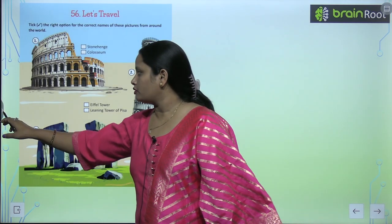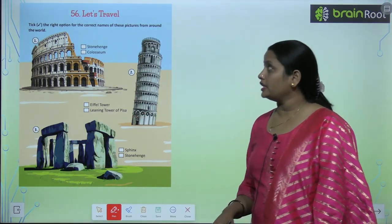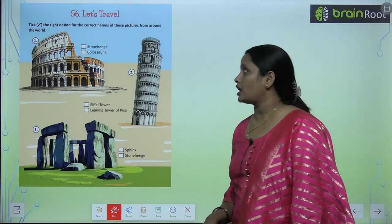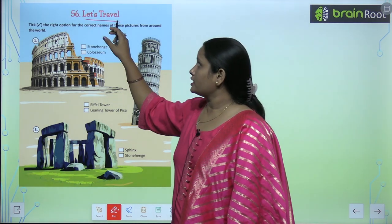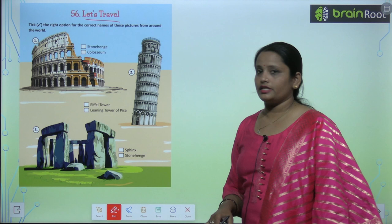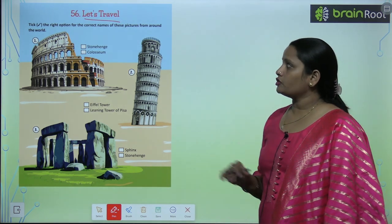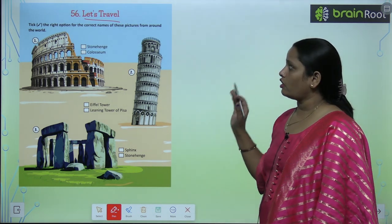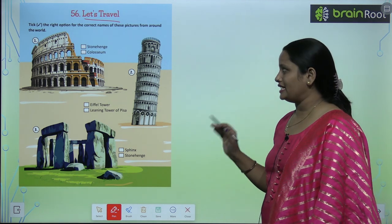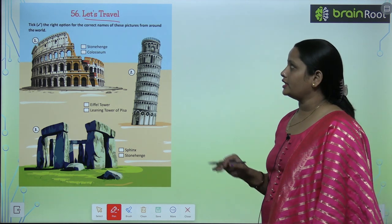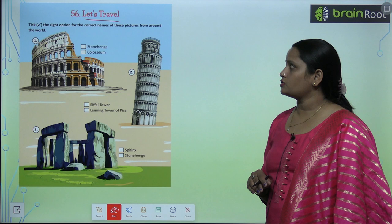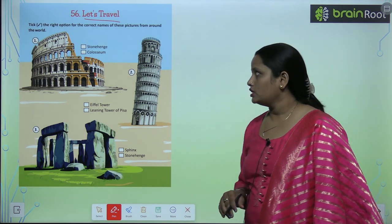Now children, let's move on to chapter number 56 and the name of the chapter is Let's Travel. In this chapter we can see there are beautiful buildings in front of us. We have to take the right option for the correct names. We have to check the right option. All these pictures are from around the world.